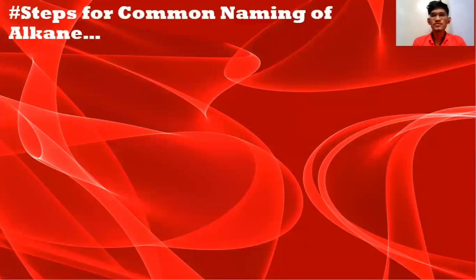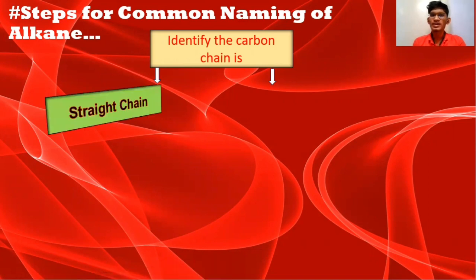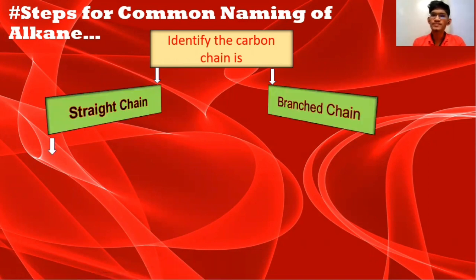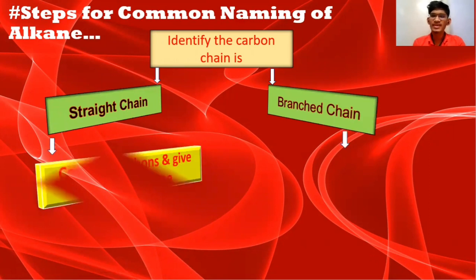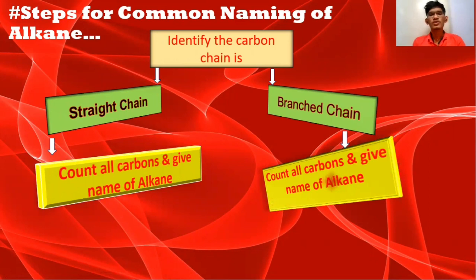Now we'll see the steps for the common naming of an alkane. There is a flowchart which you'll refer to while common naming of an alkane. First, identify if the carbon chain is straight or branched. If it is a straight chain, you have to count all the carbons and give the name of an alkane. In case of a branch chain as well, you count all the carbons and give the name of an alkane.